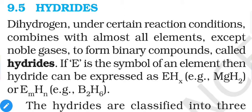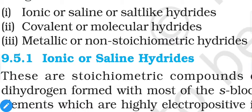Hydrogen atoms are the simplest atoms among all the periodic elements, and almost every element will combine with them to form binary compounds — binary meaning they contain two different types of atoms — except noble gases, which are very stable. Based on different types of formations, we categorize them into three categories: ionic or saline or salt-like hydrides; second, covalent or molecular hydrides; and third, metallic or non-stoichiometric hydrides.